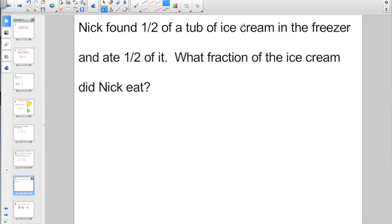Nick found half a tub of ice cream in the freezer, and he ate half of it. What fraction of the ice cream did Nick eat? Well, he found half a tub, and he ate half of it. So he ate half of half a tub. Of means multiply, right? Do I even have to work this one out? Go with numerator times numerator, denominator times denominator. 1 times 1 is 1. 2 times 2, that's 4. So Nick ate 1 fourth of the ice cream.